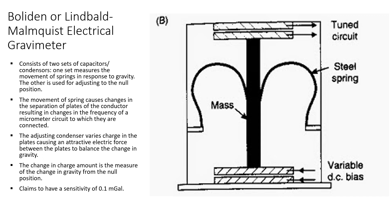In the Boliden gravimeter, the spring moves in response to changes in gravity, bringing a change in plate separation, which prompts the lower condenser to change the amount of charge so as to counteract the changes in gravity. This amount of charge that needs to be introduced is thus a measure of the change in the value of gravity. In the next lecture we'll be discussing the principle of the unstable gravimeter and its types. Have a nice day.